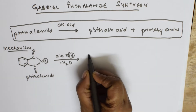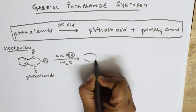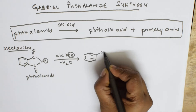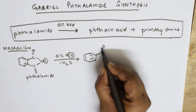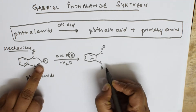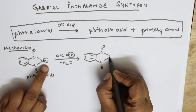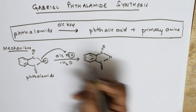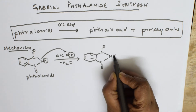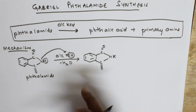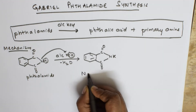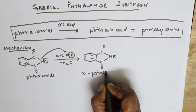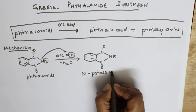The benzene ring remains with alternate pi bonds, C=O on both sides. What is left of N — water is already eliminated — and N attacks K, giving N-K. The name of this compound is N-potassium phthalimide, which is called potassium phthalimide.